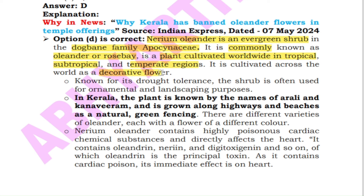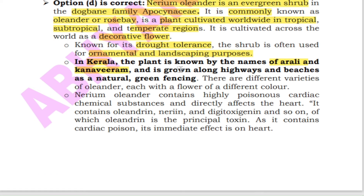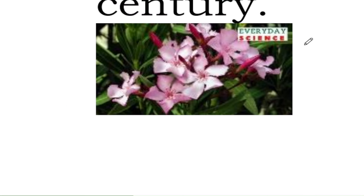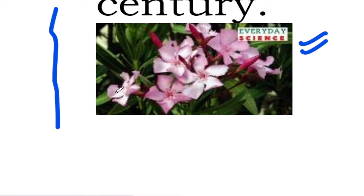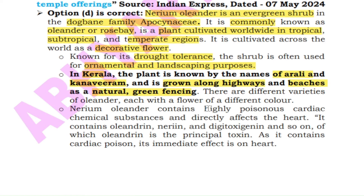Nerium oleander is basically a decorative flower. It is drought tolerant and used for ornamental and landscaping purposes. In Kerala, it is also known as Arali or Kanna Veeram, and is grown along highways and beaches as natural green fencing. Nerium oleander flowers contain highly poisonous cardiac glycoside substances which directly affect the heart — such as oleandrin, neriine and digitoxigenin. Oleandrin is the principal toxin which affects cardiac health.